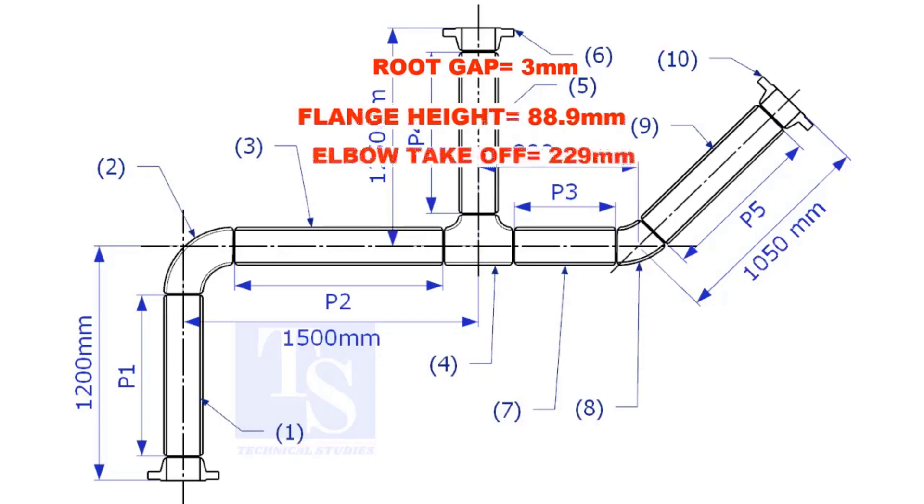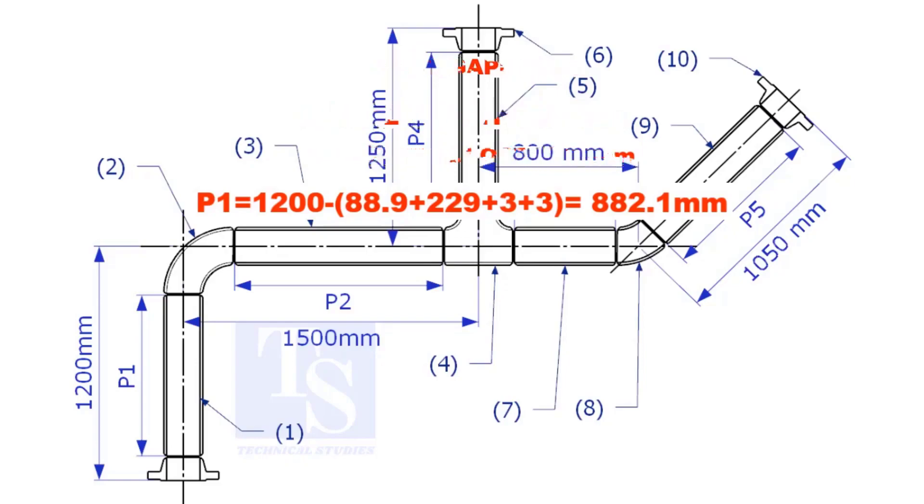Substitute the sum of the height of the flange, elbow takeoff, and 2 root gaps from the total length of 1500. Length of pipe P1 is 882.1mm.